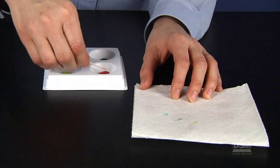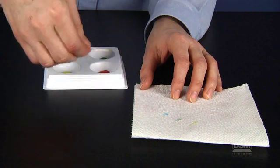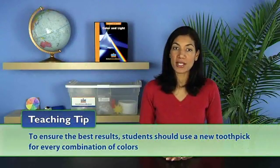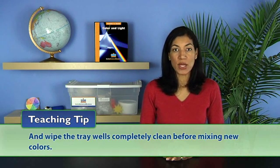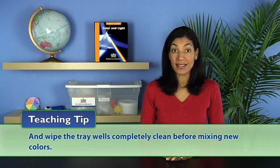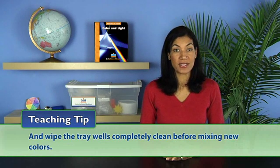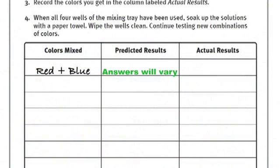Students will test and observe color combinations by touching the stirring end of their toothpick to a white paper towel. To ensure the best results, students should use a new toothpick for every combination of colors and wipe the tray wells completely clean before mixing new colors. Give students time to try all of the combinations, as well as those they have come up with on their own. Remind them to predict what colors they will get before actually mixing them.